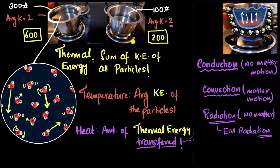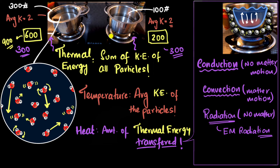Going back to our example, let's say we switch on the stoves and wait. We transfer about the same amount of energy — let's say 300 units of heat energy. As a result, what happens to thermal energy? Thermal energy increases. The larger vessel goes from 600 to 900 units; the smaller vessel goes from 200 to 500 units. So at any given moment, the larger vessel still has more thermal energy than the smaller one.